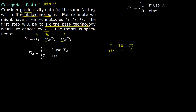If 494 units are produced using technology 2, you put D2 as 1 and D3 as 0. If 600 units are produced using technology 3, you put D2 as 0 and D3 as 1. Again, if 495 units are produced using technology 1, you put D2 as 0 and D3 as 0. You build up your dataset this way with production figures and corresponding technology coding.